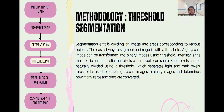The next methodology is threshold segmentation. Segmentation entails dividing an image into areas corresponding to various regions. The easiest way to segment an image is with a threshold. A greyscale image can be transformed into a binary image using thresholding, where intensity is the most basic characteristic that pixels can share. Such pixels can be naturally divided using a threshold which separates light and dark pixels. Thresholding converts greyscale images to binary images and determines how many zeros and ones are assigned.